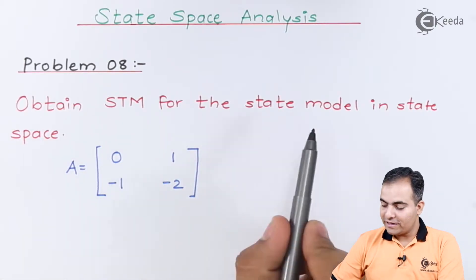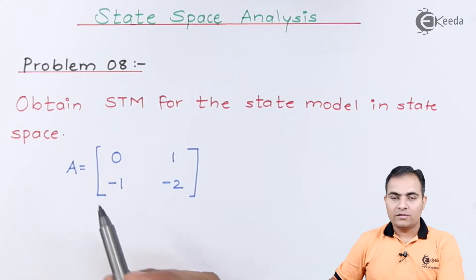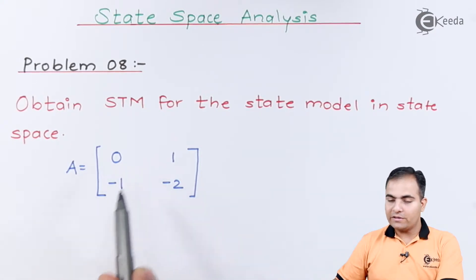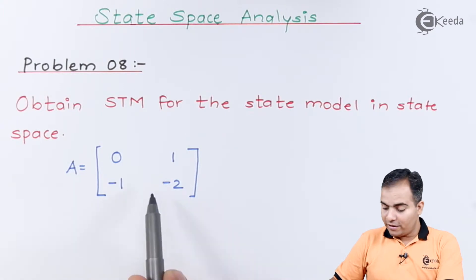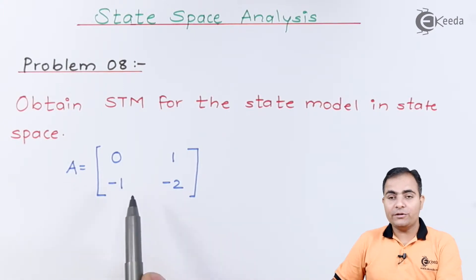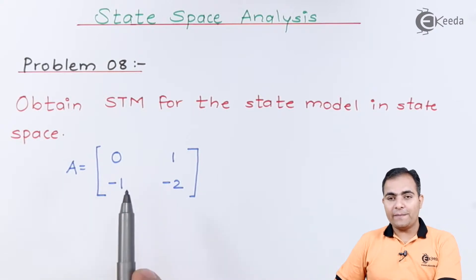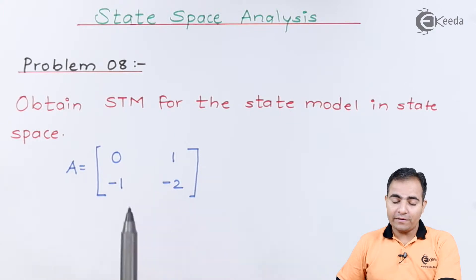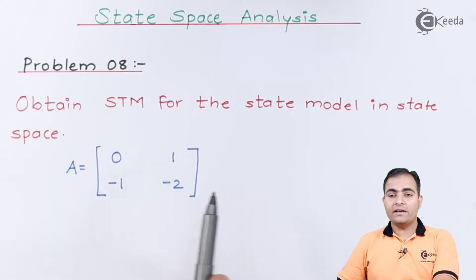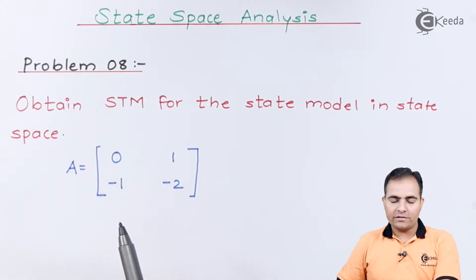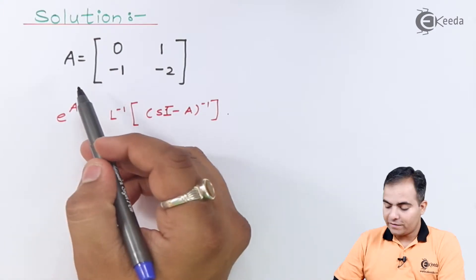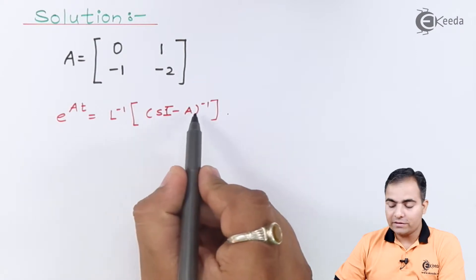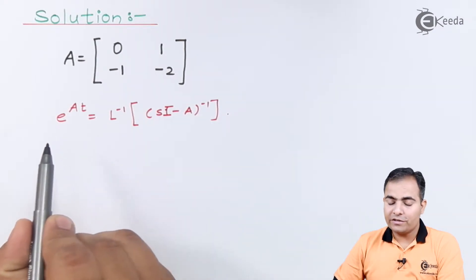Obtain the state transition matrix for the state model in state space. The state matrix A is given as: first row [0, 1] and second row [-1, -2]. We will use the formula e^(At) = L⁻¹{(sI - A)⁻¹}. We'll find the inverse of (sI - A) and then take the inverse Laplace transform to get the state transition matrix.